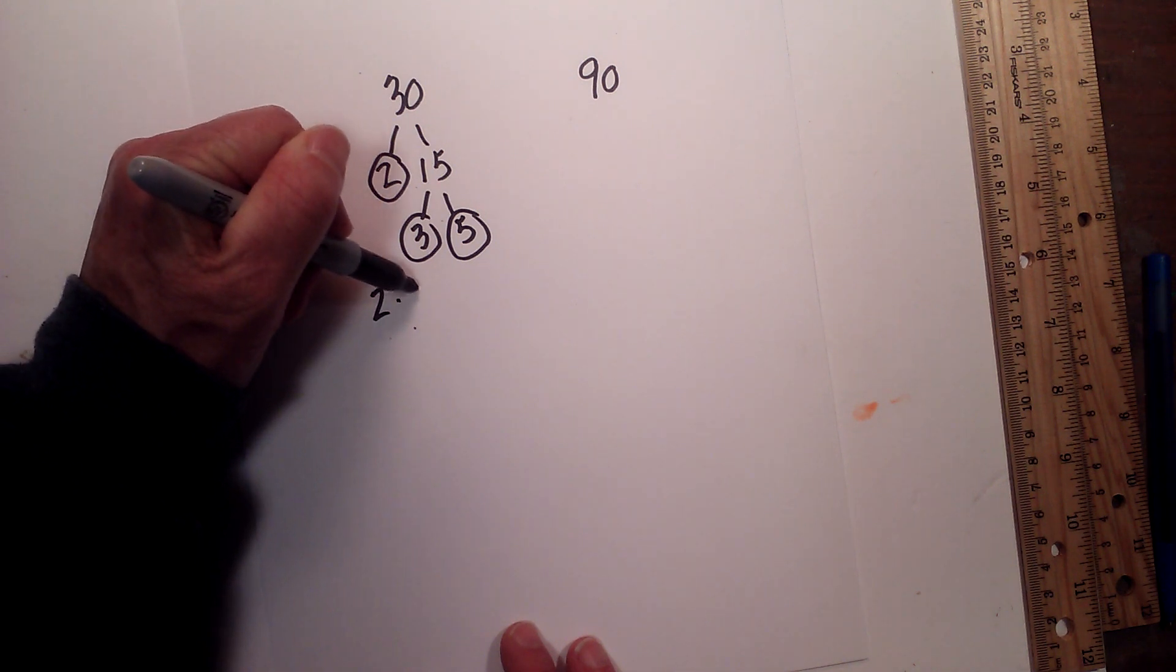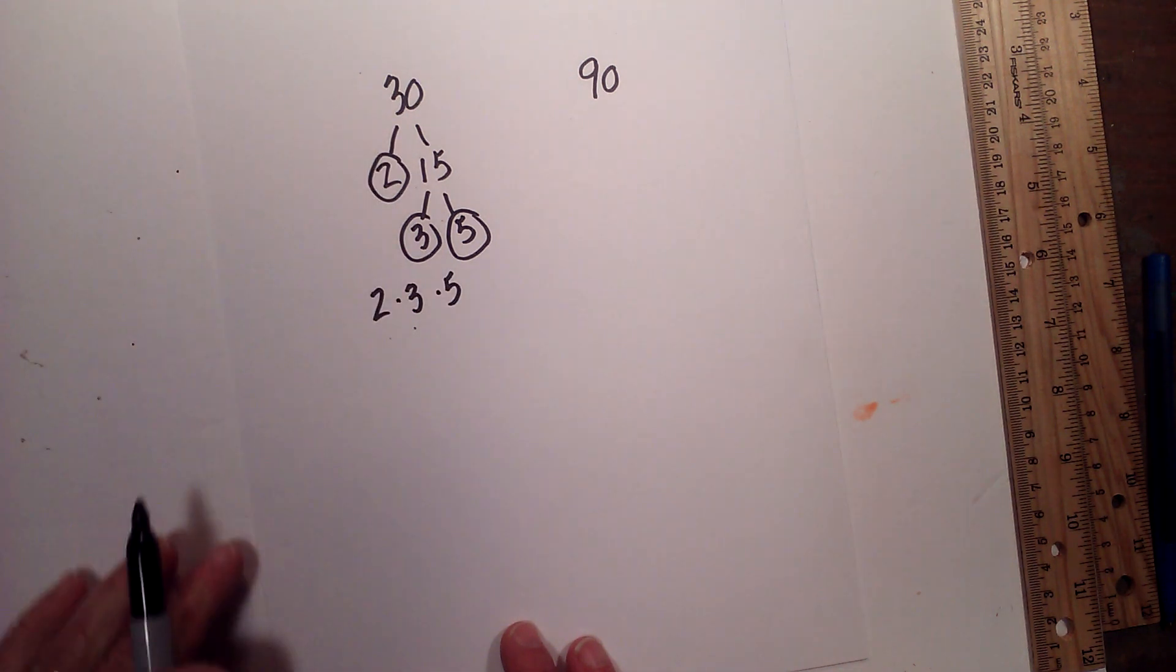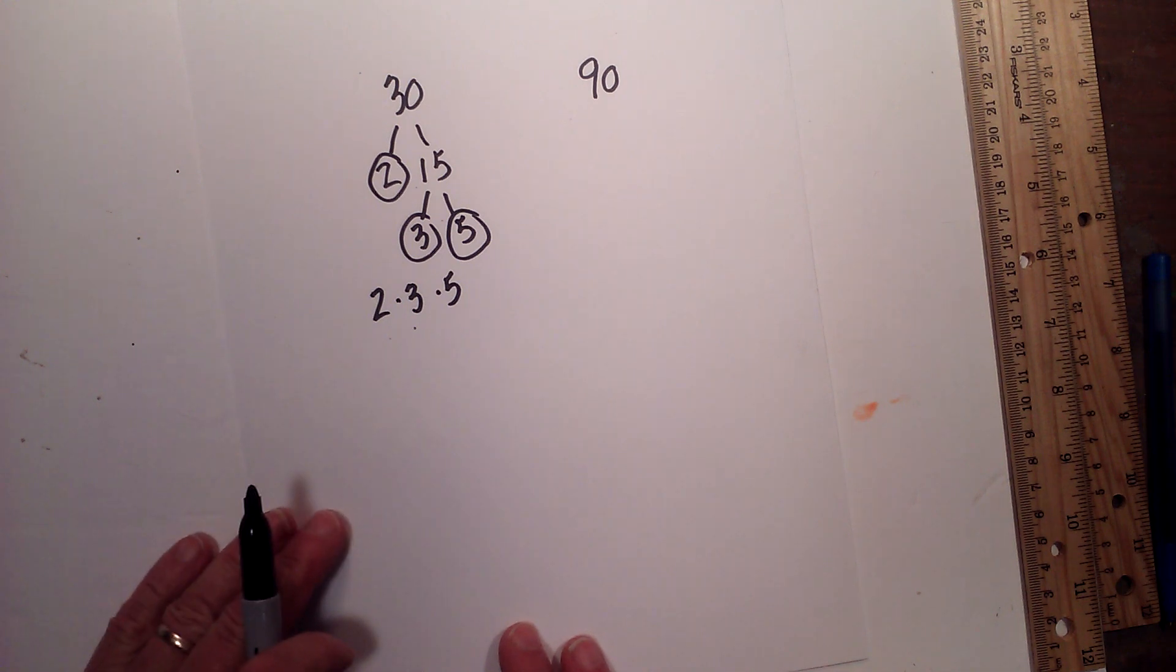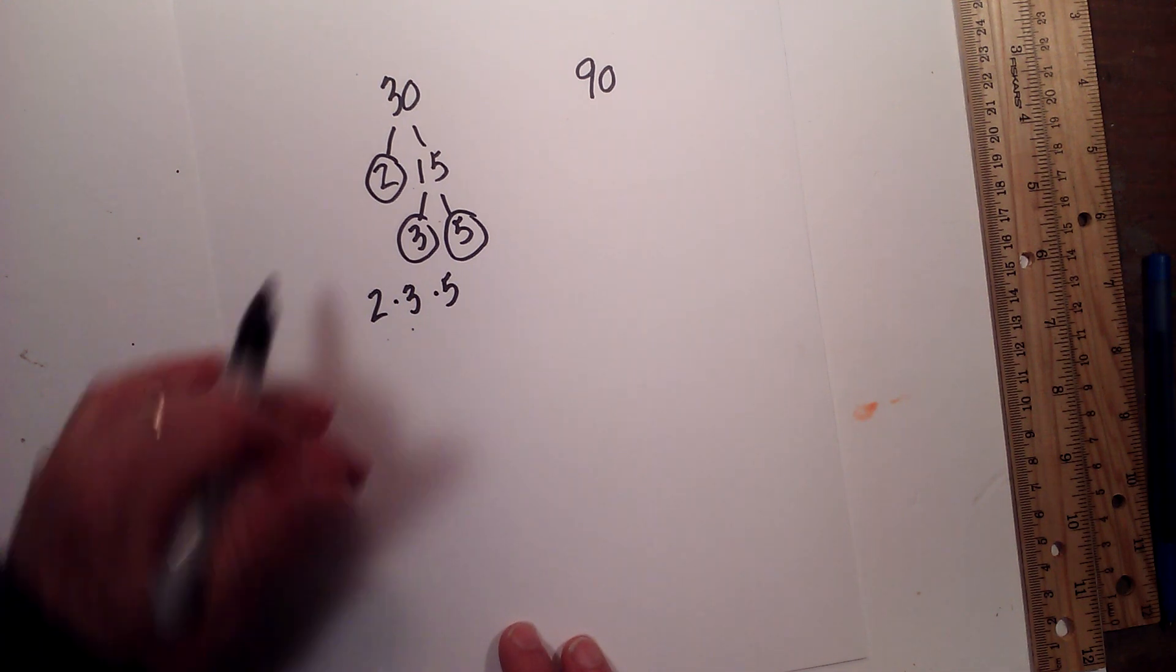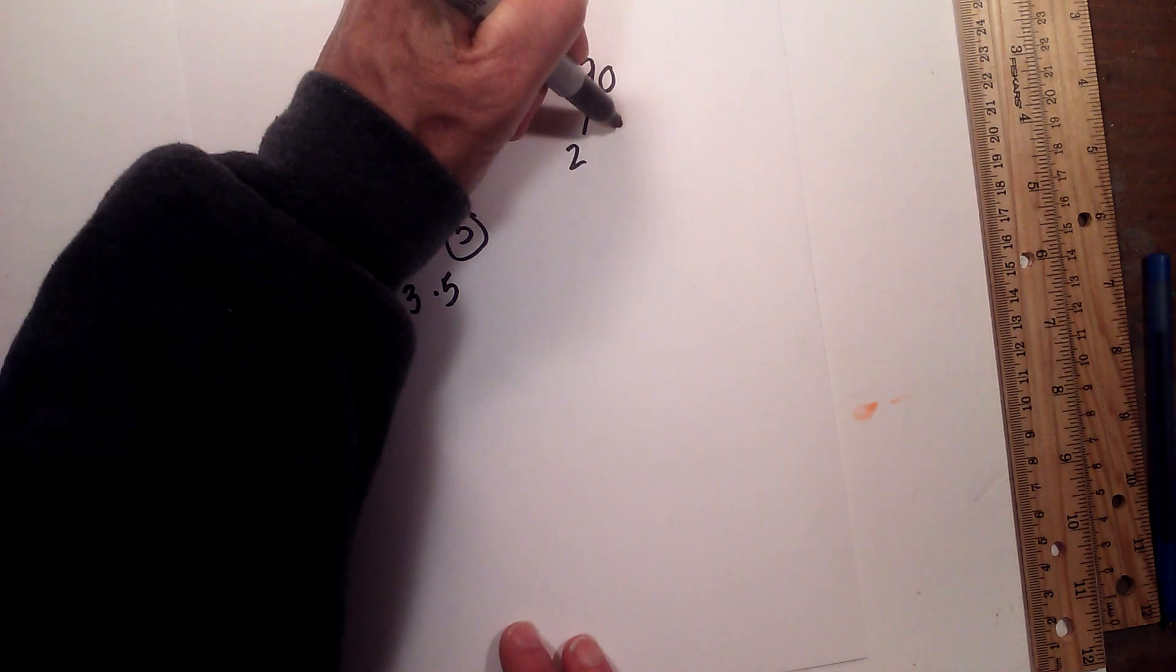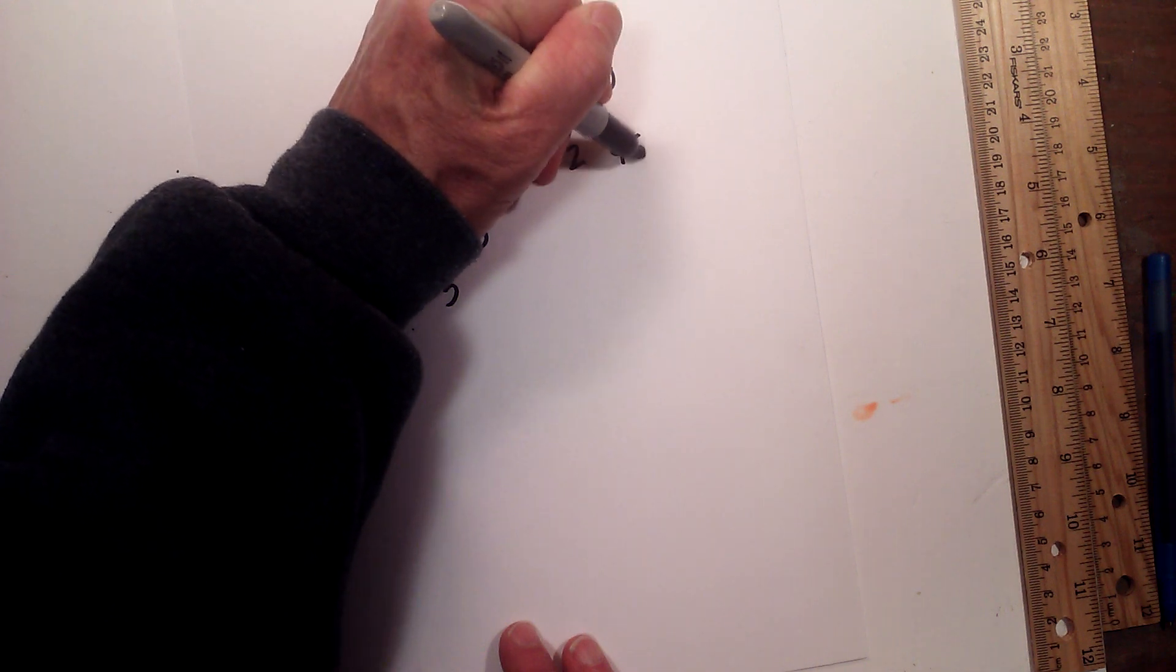So it is 2 times 3 times 5. Next let's look at 90. Let's begin with 2 times 45 equals 90.